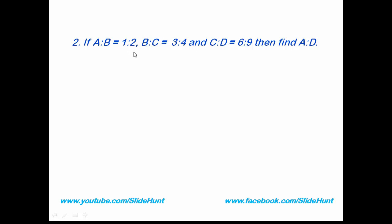Question number 2: If A is to B equals 1 is to 2, B is to C equals 3 is to 4, and C is to D equals 6 is to 9, then find A is to D. It's a very easy question, but important.